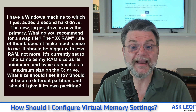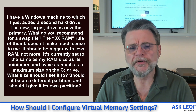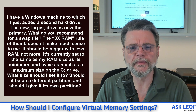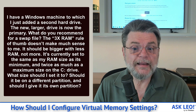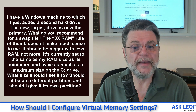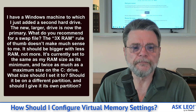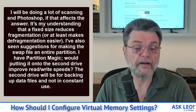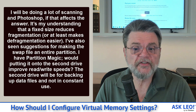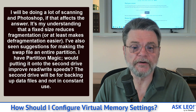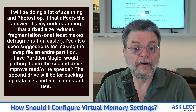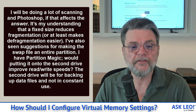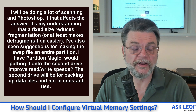I have a Windows machine to which I added a second hard drive. The new larger drive is now the primary. What do you recommend for a swap file? The three times RAM rule of thumb doesn't make much sense to me — it should be bigger with less RAM, not more. It's currently set to the same as my RAM size as its minimum and twice as much as a maximum size on the C drive. What size should I set it to? Should it be on a different partition and should I give it its own partition? I'll be doing a lot of scanning and Photoshop if that affects the answer. It's my understanding that a fixed size reduces fragmentation or at least makes defragmentation easier. I've also seen suggestions for making the swap file an entire partition. I have Partition Magic. Would putting it onto the second drive improve read/write speeds? The second drive will be for backing up data files and not in constant use.